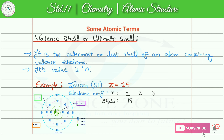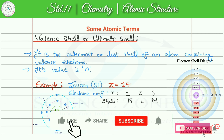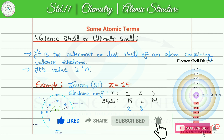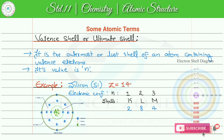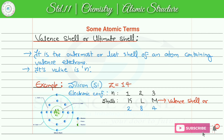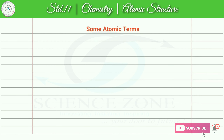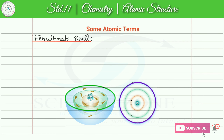तो n की values हैं one, two, and three, और shells होंगे K, L, and M. अब 14 electrons को इन shells में arrange करना है। First shell की capacity है 2, second shell में 8 electrons, और remaining 4 electrons जाते हैं third shell में। This is our ultimate shell, और यहां पे n की value 3 है जो valence shell को represent कर रहा है। ये four electrons हमारे valence electrons हैं।